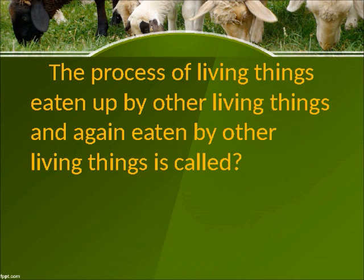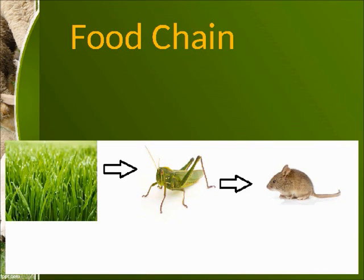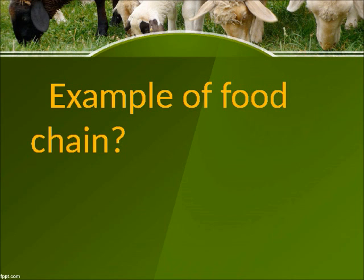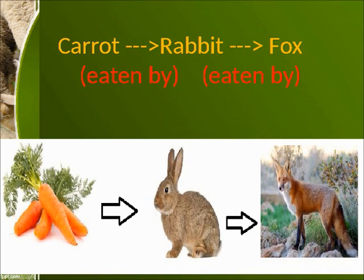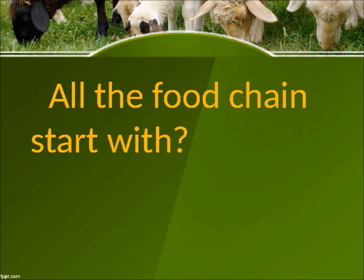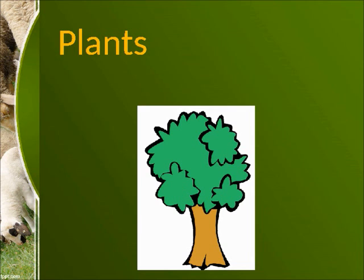The process of living things being eaten by other living things, and again eaten by other living things, is called a food chain. Example of a food chain: carrot eaten by rabbit, eaten by fox. All food chains start with plants.